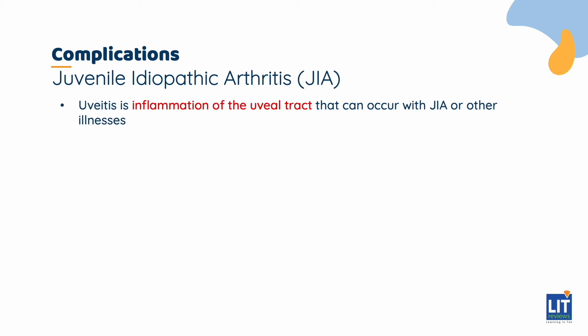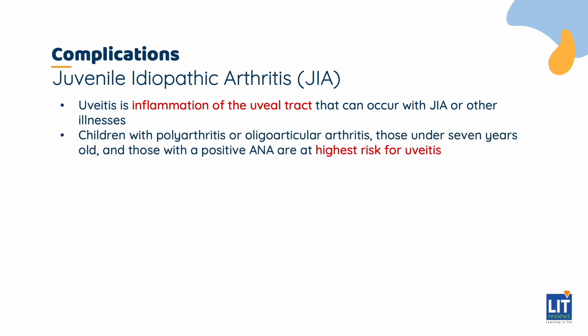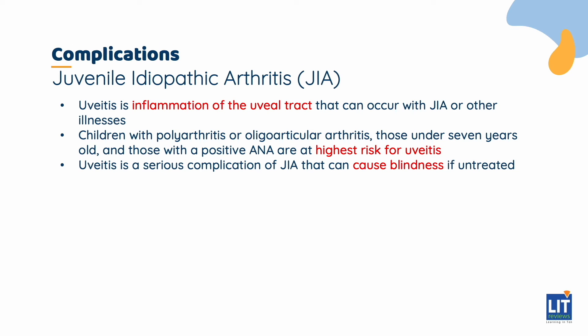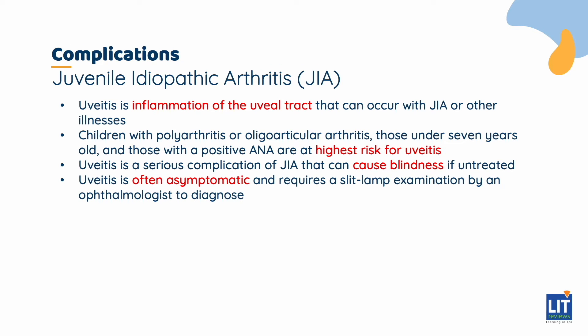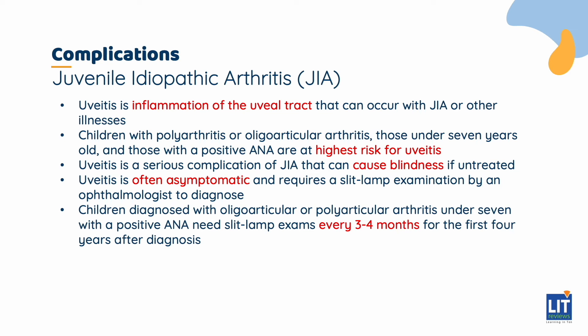Uveitis is uveal tract inflammation that occurs with JIA, other systemic illnesses, or alone. The highest risk for uveitis is in children with polyarthritis or oligoarticular arthritis, children less than 7 years, and those with a positive ANA. It is the most serious complication of JIA since it causes blindness if left untreated. Since uveitis is often asymptomatic, the only way to diagnose it is with a slit lamp examination by an ophthalmologist. ANA positivity in a child diagnosed with oligoarticular or polyarticular arthritis under the age of 7 conveys the highest risk for uveitis. These children require slit lamp examinations every 3 to 4 months for at least the first 4 years after diagnosis.